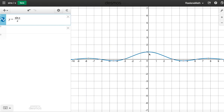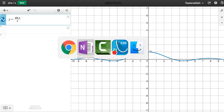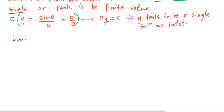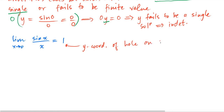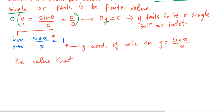Looking at the graph, we see that we have no point, so it's like we have a hole. This point of what looks like (0, 1) is the point removed. We have a hole, which means that we have a limit value — the y-coordinate of the hole is the limit value. So we can use that graphically to say that the limit as x approaches 0 of sin x over x is equal to 1, where the 1 represents the y-coordinate of the hole on the graph.